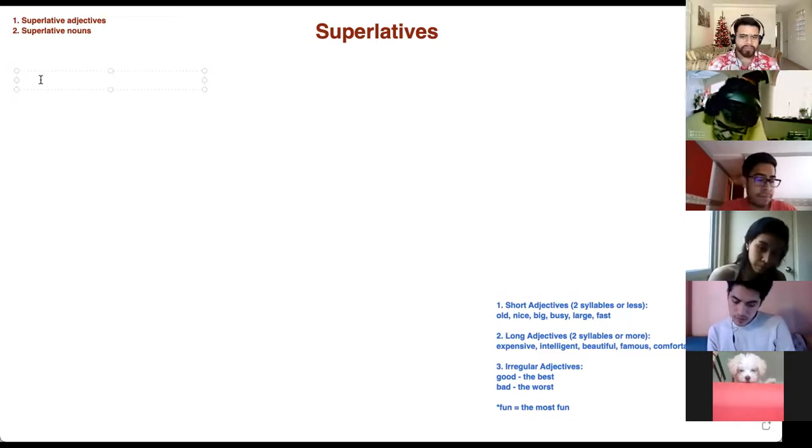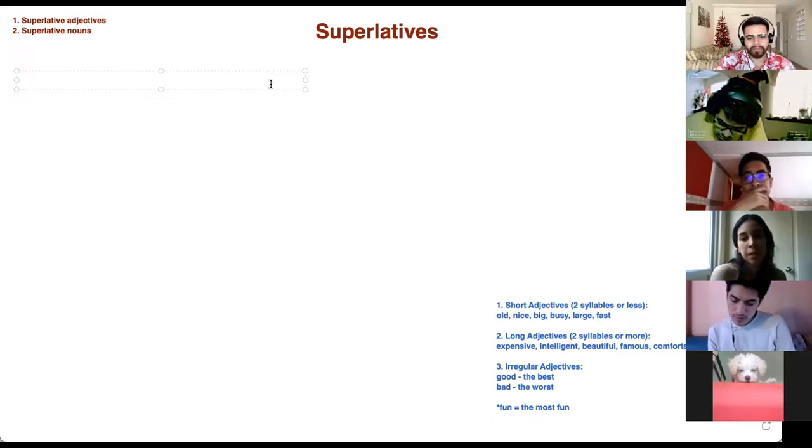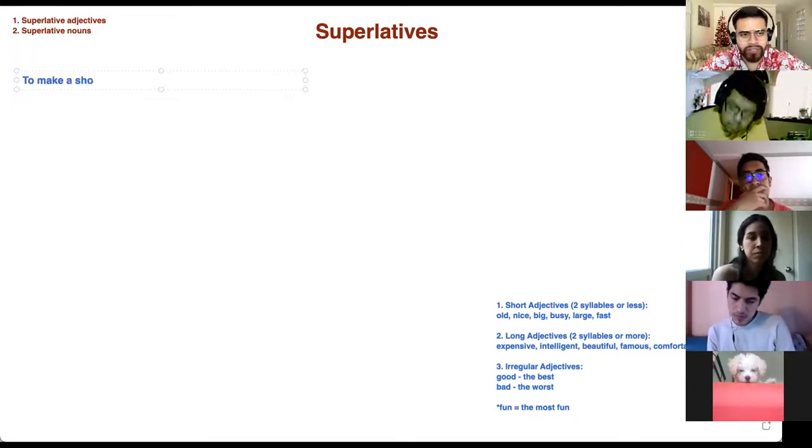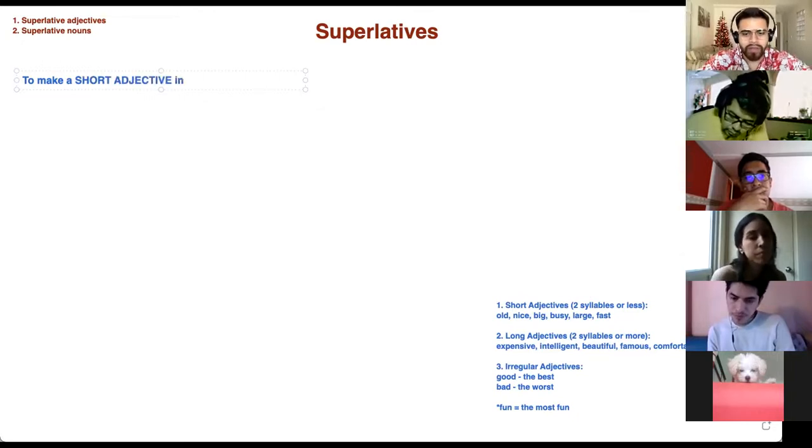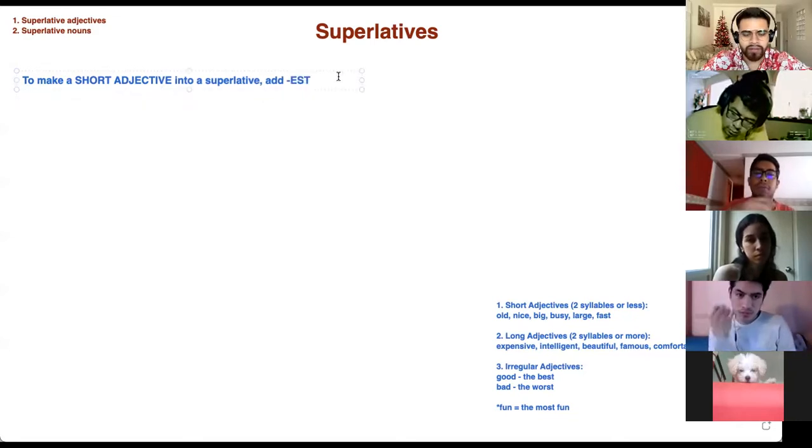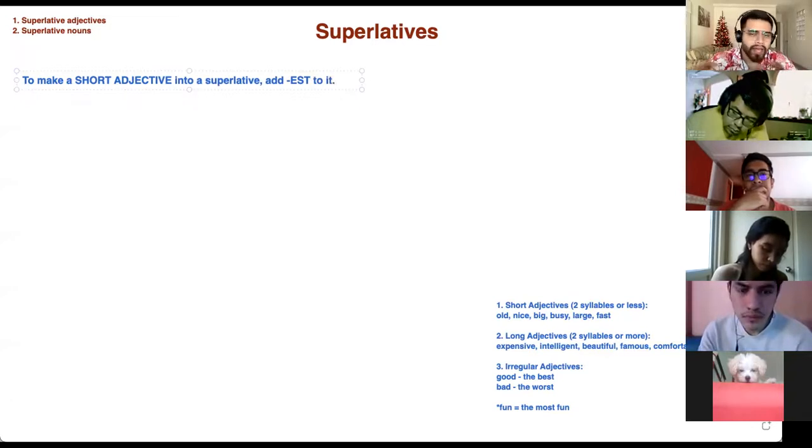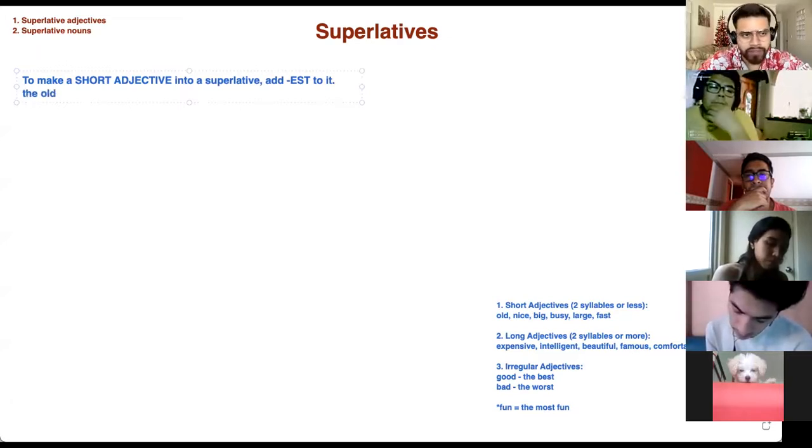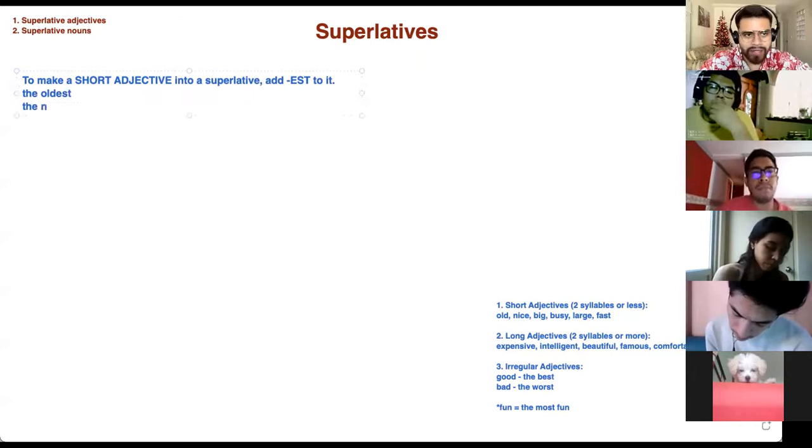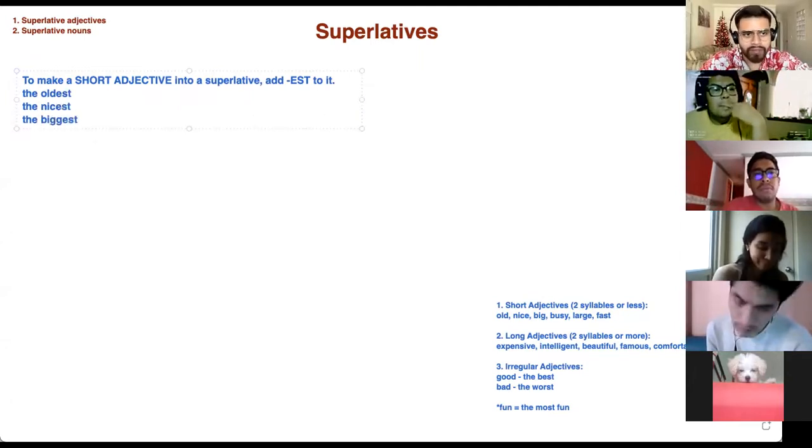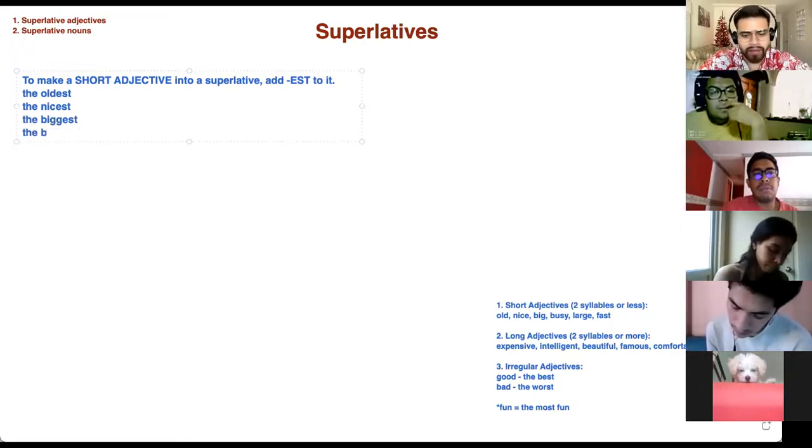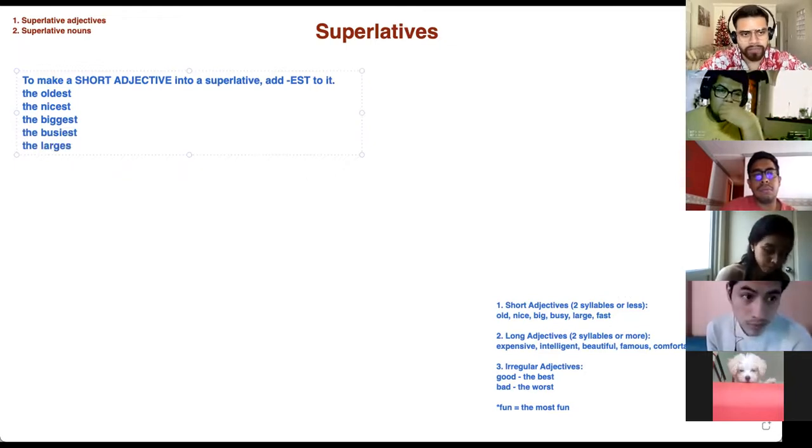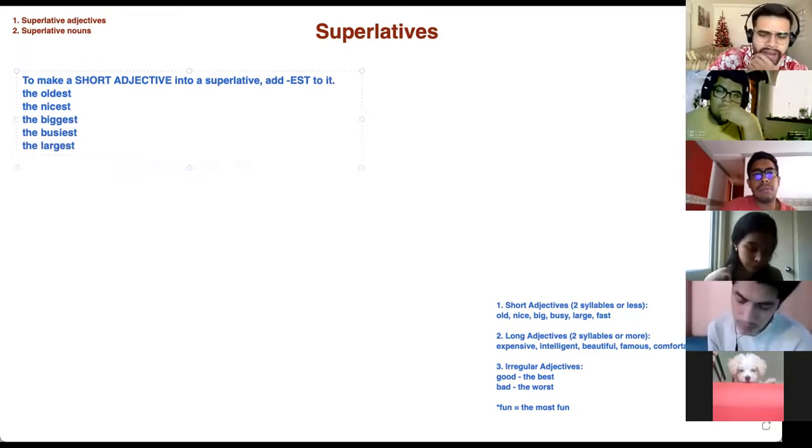Now, short adjectives. To make a short adjective into a superlative, add EST to it. For example, old, you're going to say the oldest. Nice, the nicest. Big, the biggest. Busy, the busiest. Large, the largest. And fast is the fastest.